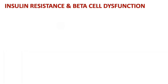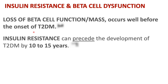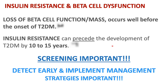One more important point: the loss of beta cell function occurs well before the onset of type 2 diabetes. Furthermore, insulin resistance can precede the development of type 2 diabetes by 10 to 15 years. So a person may have beta cell dysfunction and insulin resistance and not even be aware of it. This is why screening is so important for type 2 diabetes — by detecting it early, we can implement management and treatment strategies to help slow the progression.